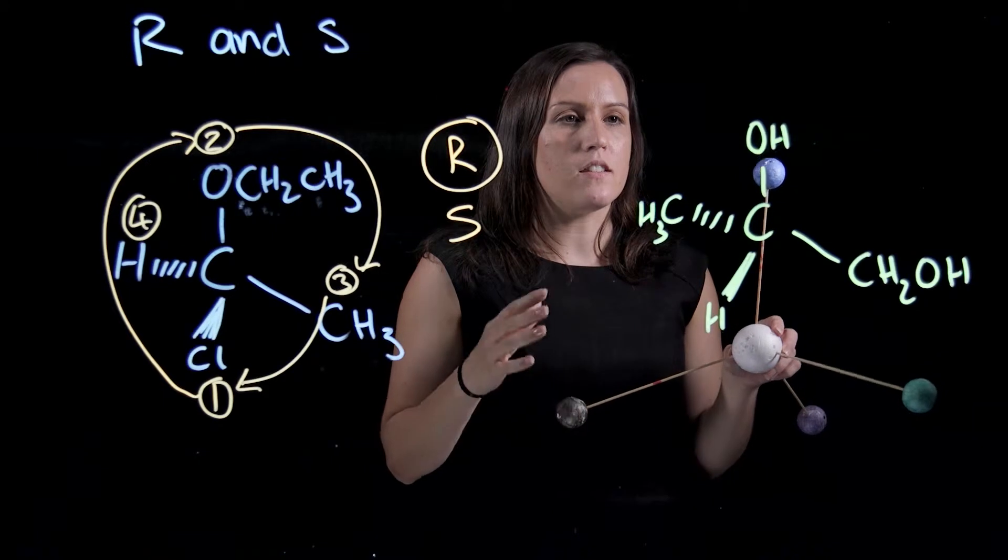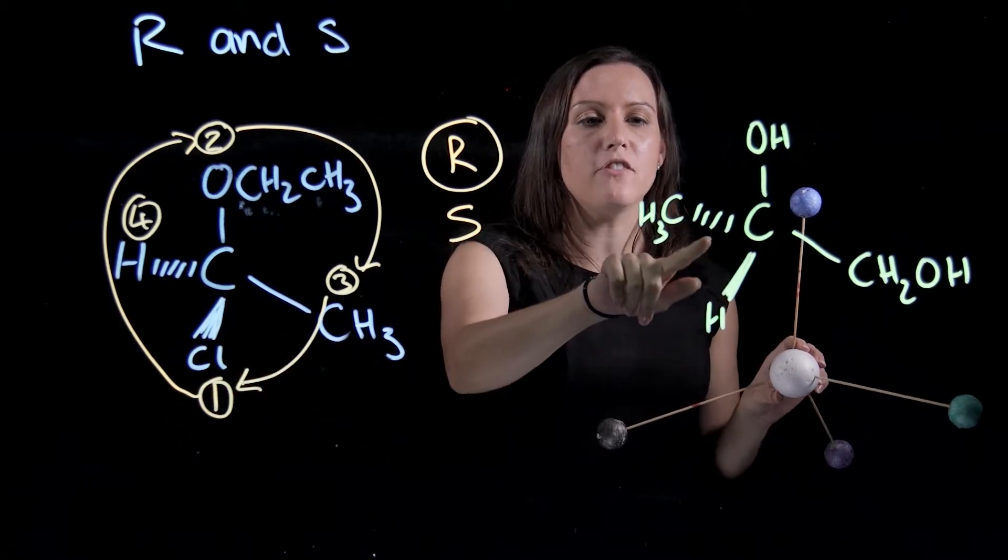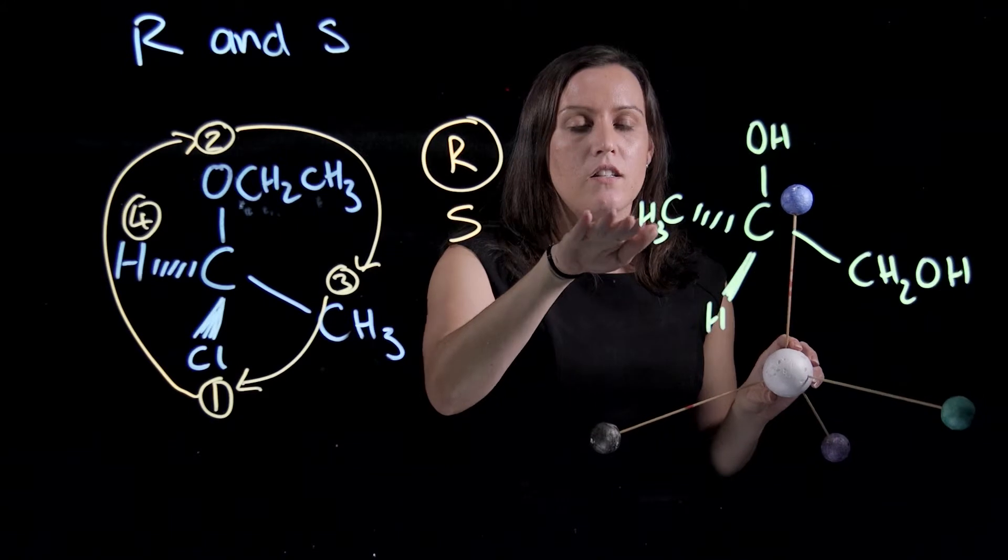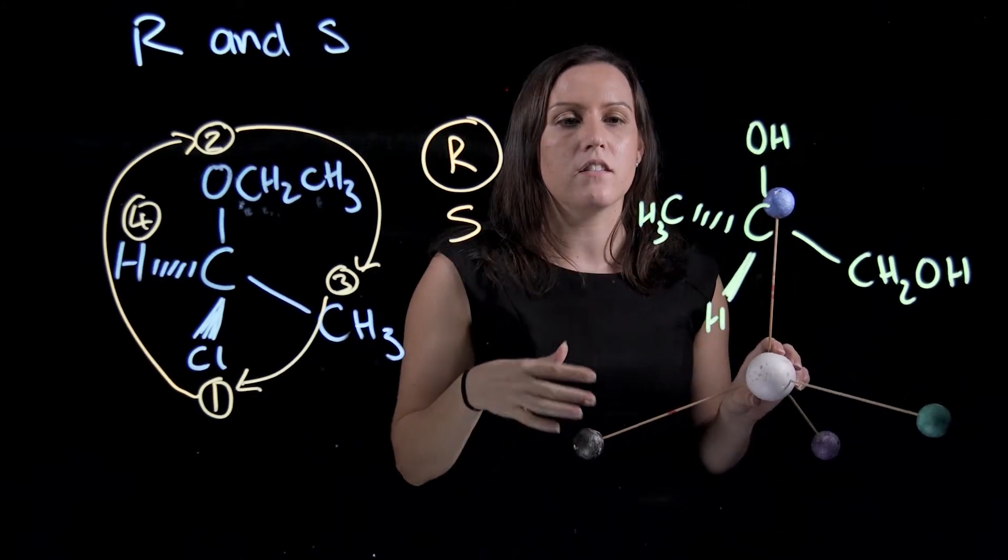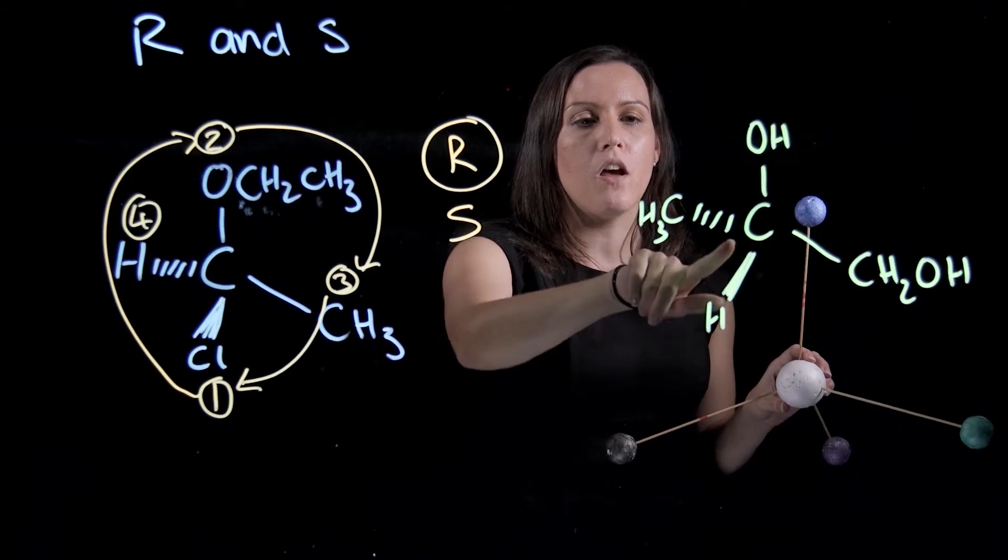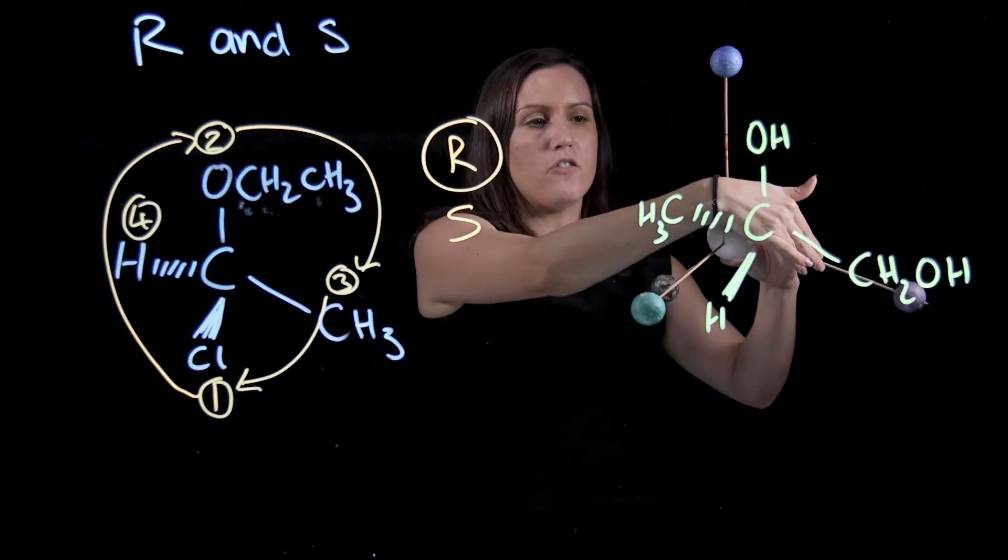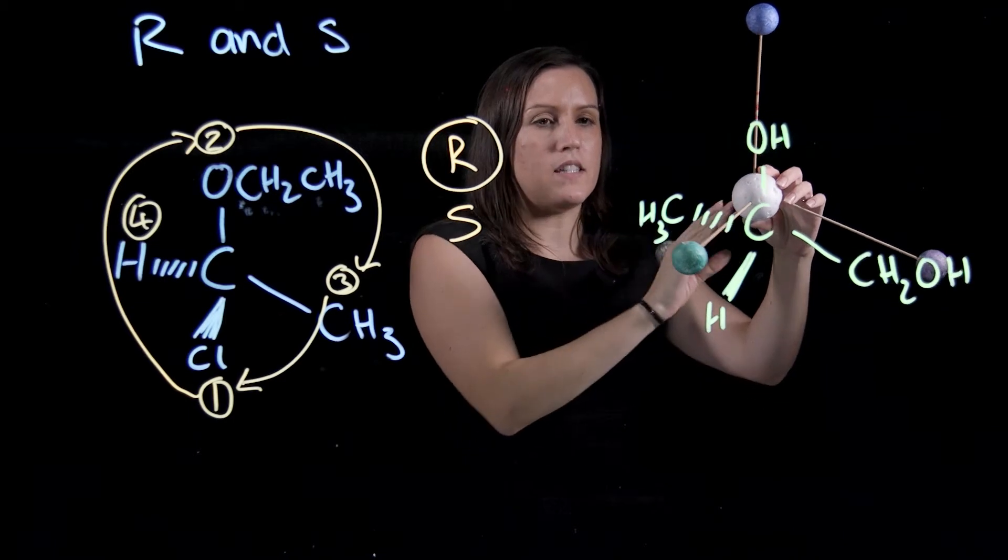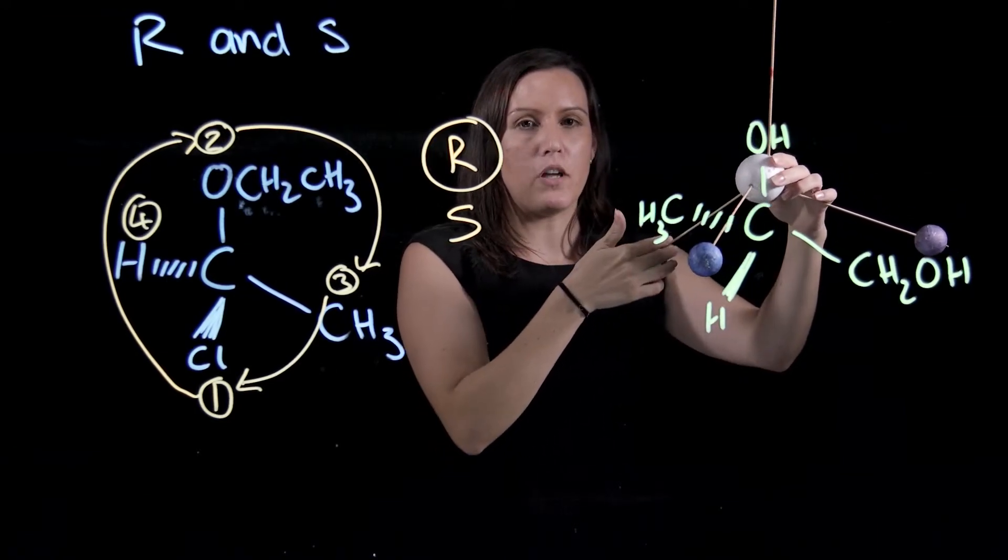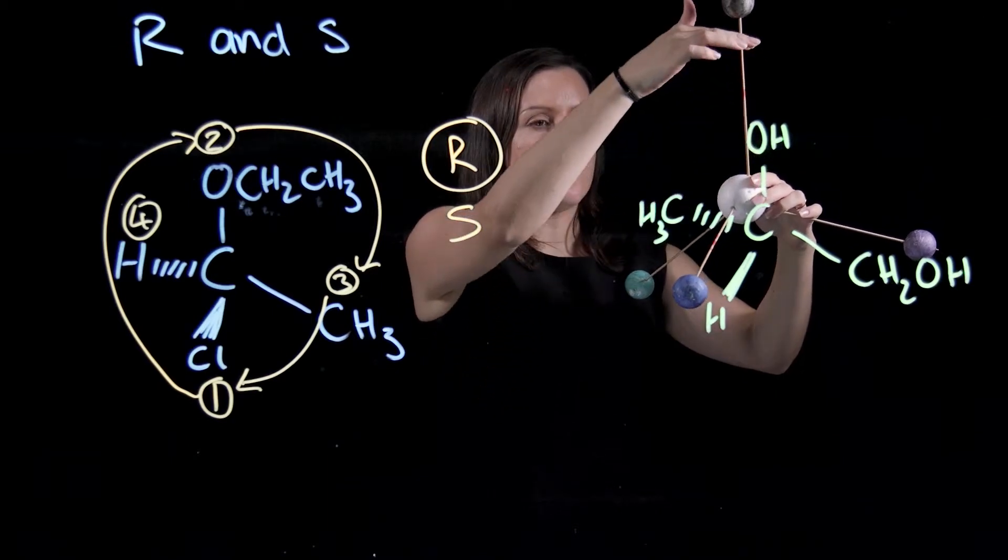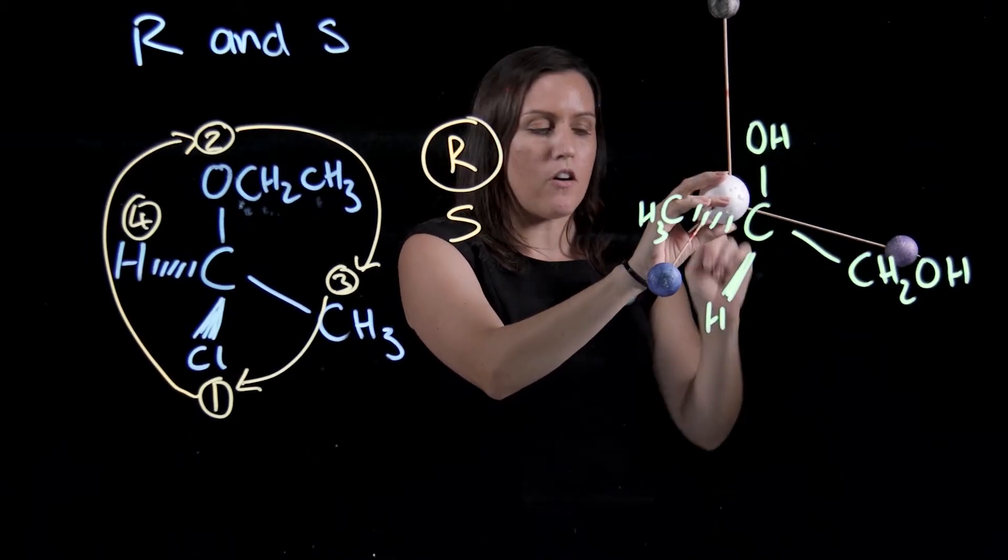Before I start assigning my one, two, three, fours, what I might do is rotate this molecule so it's in the right conformation so that the hydrogen is going into the whiteboard or into the page. So if I've got my molecule here, this is my OH, this is my CH2OH, they're in the plane. I've got my CH3 going backwards and my hydrogen going forward. If I rotate that one over, then my hydrogen will be going back in. I'll have my CH3 going up and then my OH being forward.